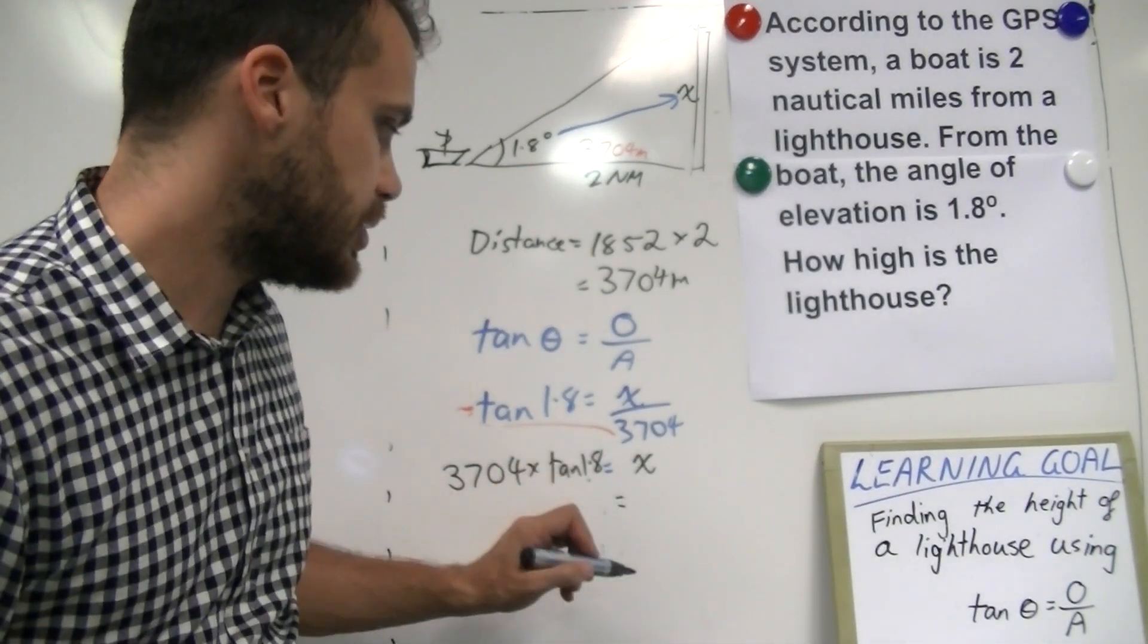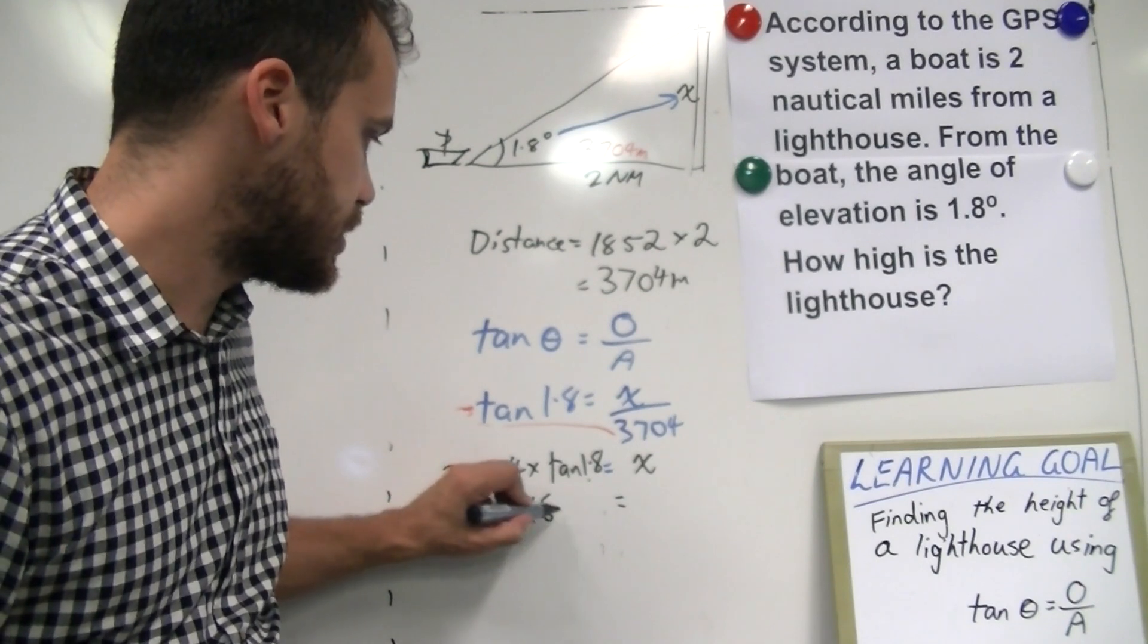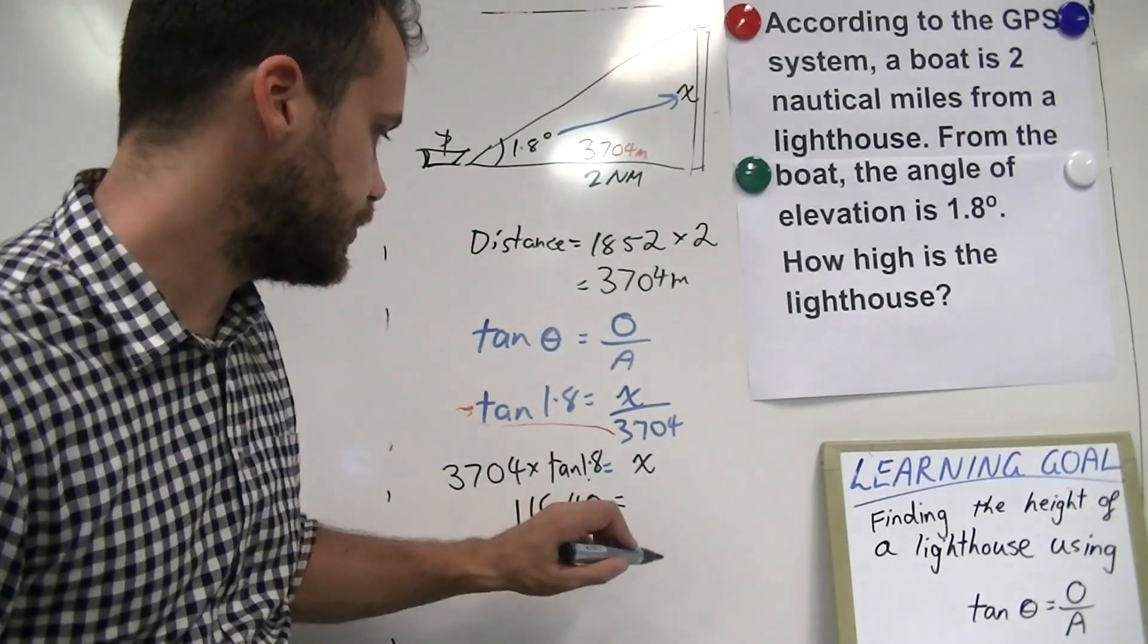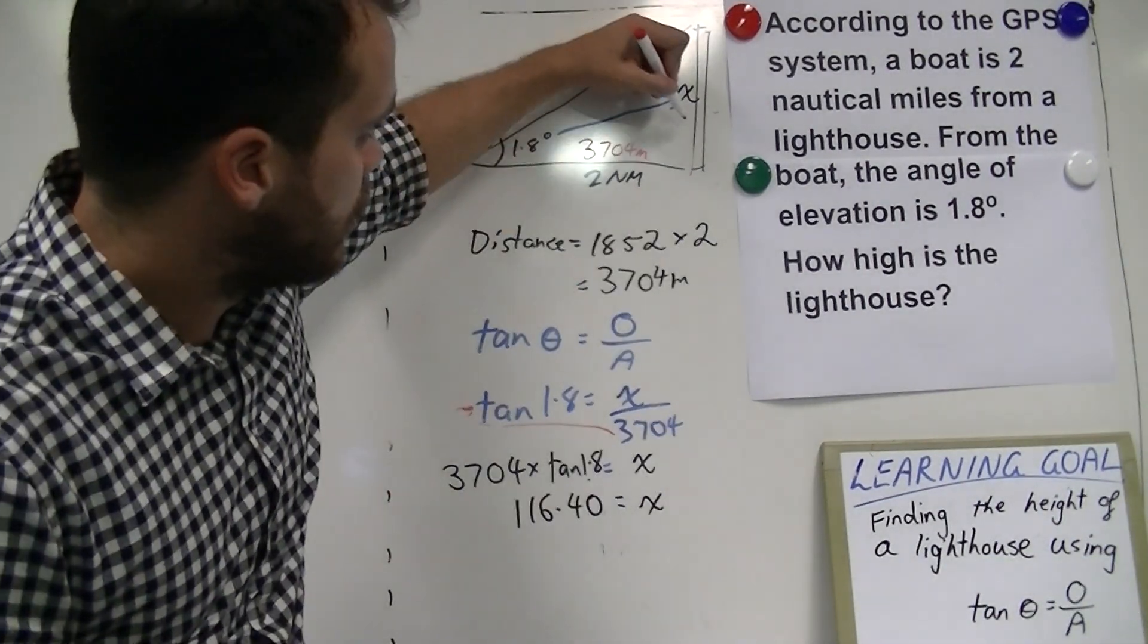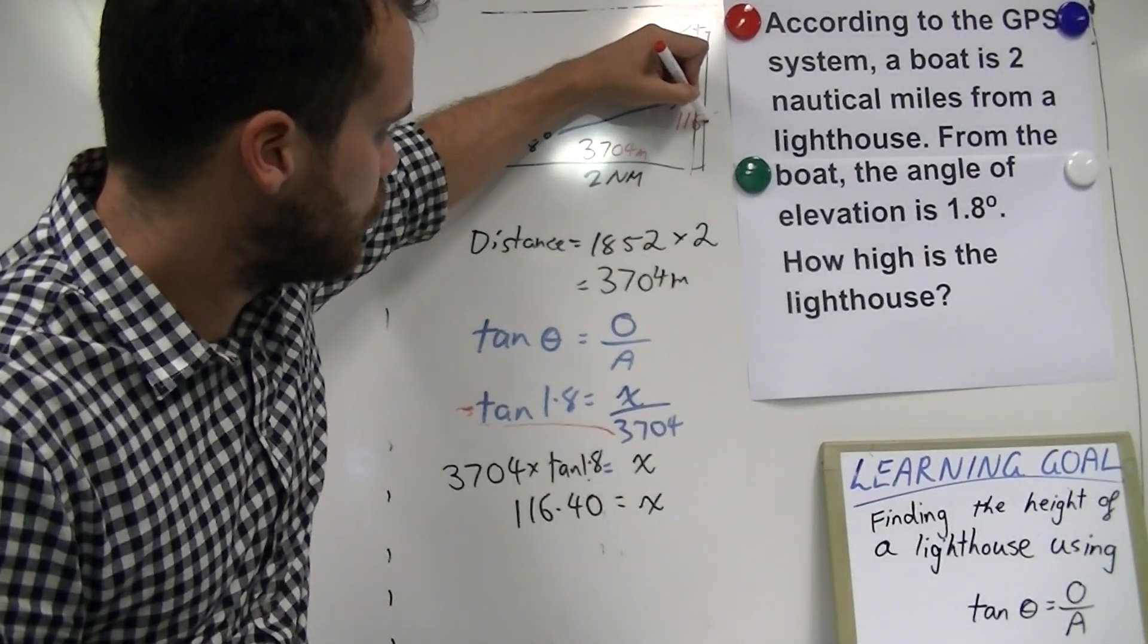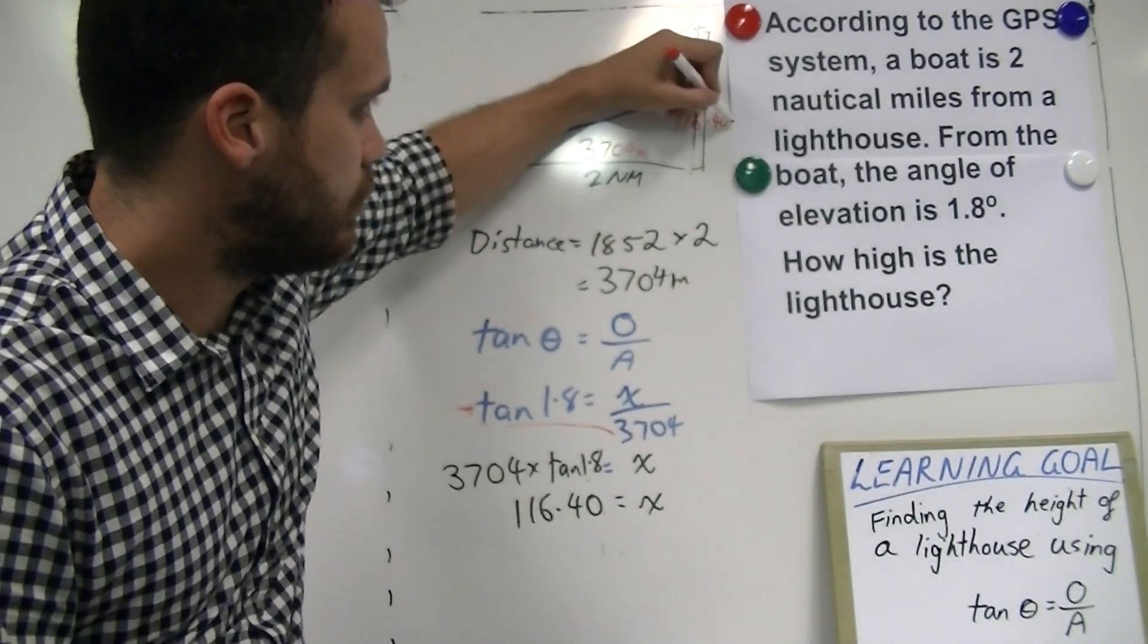Now, when you type that into your calculator, you should get 116.40. So, that means that the height of our lighthouse is 116.40 metres.